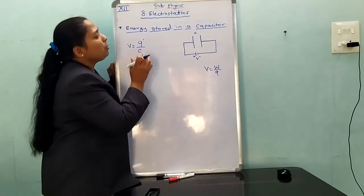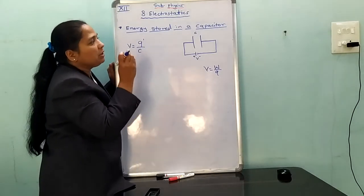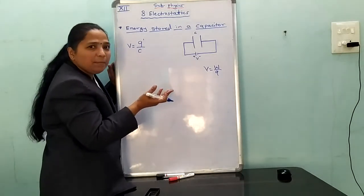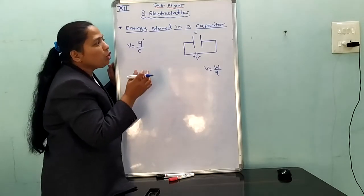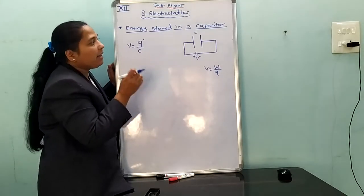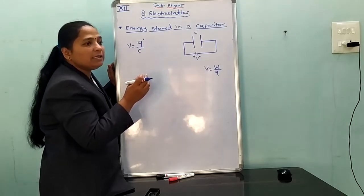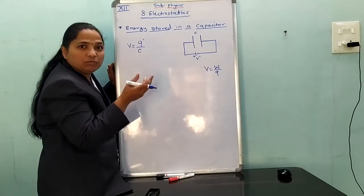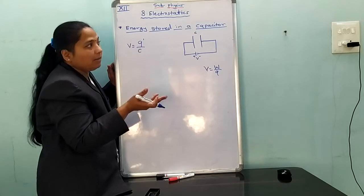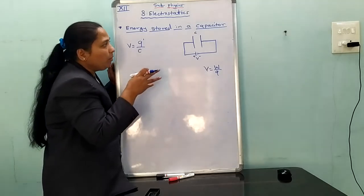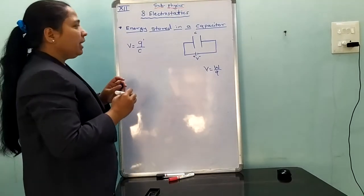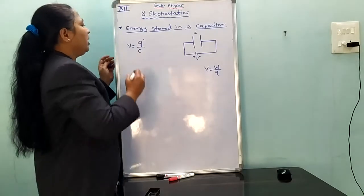During the process of charging, electrons are transferred from one plate to another plate. During the motion of charges, work is done. That work is electrostatic energy — work is stored in the form of energy, opposing the electrostatic force.